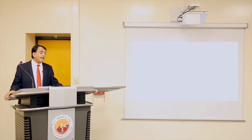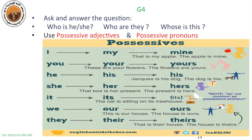Students should also be able to ask and answer questions using different possessive adjectives and possessive pronouns. For example: who is she? She is my sister. Who are they? They are my students. Whose is this? Whose is used for possession: whose table is this? Whose chair is this? The answer could be: this is my table, or this is mine. So students should be able to use different possessives to ask and answer questions.